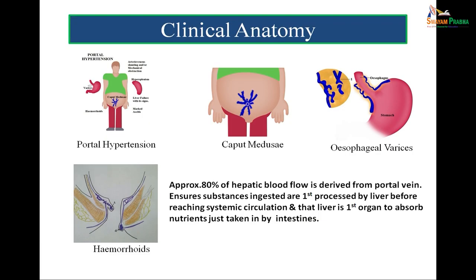The portal vein is a vein which drains the abdominal part of the alimentary tract, gallbladder, pancreas and spleen. It ensures that the substances ingested are first processed by the liver before they reach the systemic circulation. Normally, the portal pressure is 5 to 15 mmHg and when it exceeds a critical limit, then we call the condition as portal hypertension.